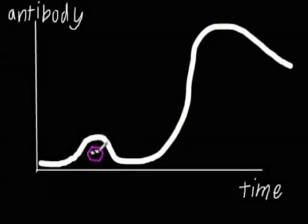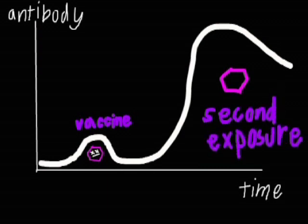Take a look at the graph of the number of antibodies made in the body over time. The first peak shows the amount of antibody produced the first time the body sees a particular virus. This first exposure could be from a vaccine, like we have been talking about.